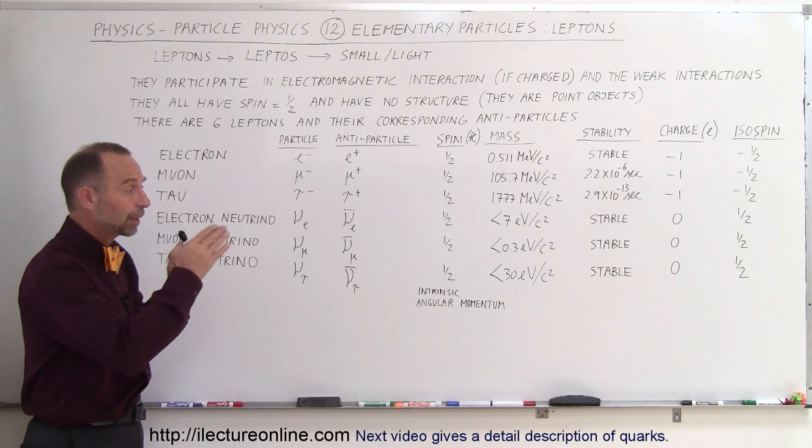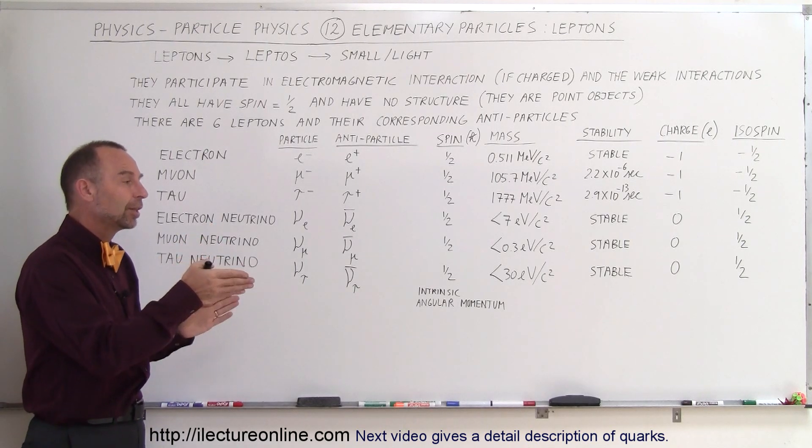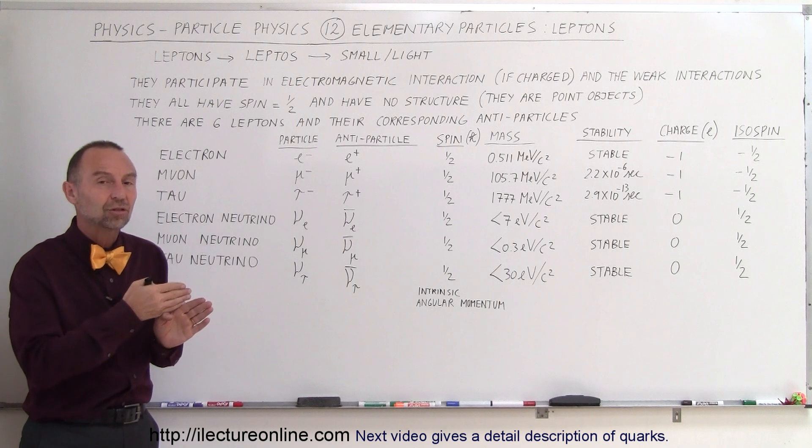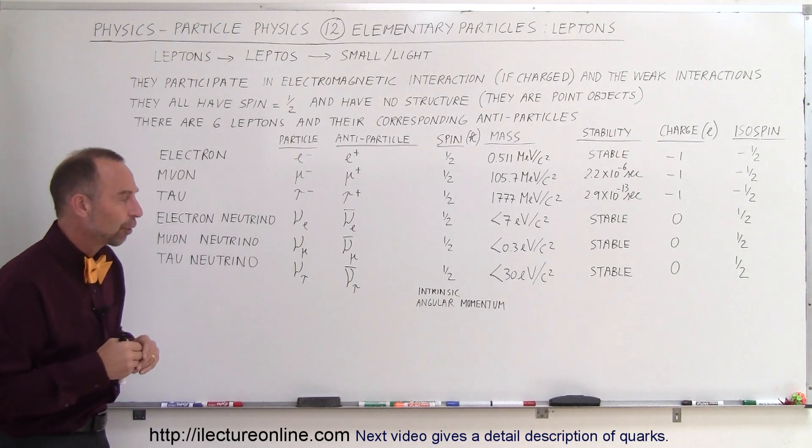you would then expect them to have an isospin according to that. In a later video I'll explain a lot more about the isospin, but it has to do with whether or not there's a strong or weak interaction with the strong force and the weak force.